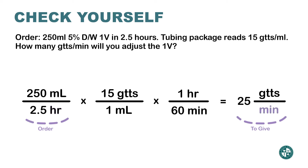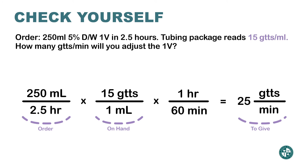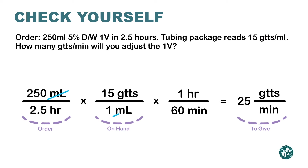So I ask myself: what do I have on hand? What I have on hand is 15 drops per milliliter. I set up that fraction so the word milliliters cancels out — I don't want milliliters on the top, I want drops on the top. Now I have drops, but I still need to handle the hour unit.